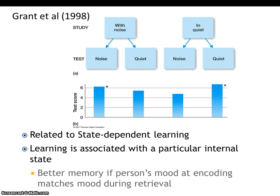This is related to state-dependent learning — the idea that learning is associated with a particular internal state. The mood you are in when being tested affects your memory. Your recall will be better if you can match that mood when you are studying. So if you know you'll feel anxious and a little stressed during a test, try to get yourself into that same state when learning the material, so your mood at learning matches your mood at testing.